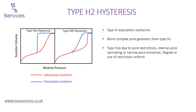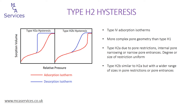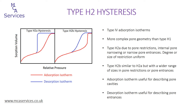The converse is true of type H2B hysteresis. The more gradual slope of the desorption isotherm is indicative of the sizes of pore restrictions or pore entrances covering a greater range, thus being less uniform. Both the adsorption and the desorption isotherms provide very useful information: the adsorption isotherm describes the size of the pore cavities or pore bodies, and the desorption isotherm describes the dimensions of pore entrances or the restrictions within the porous network.